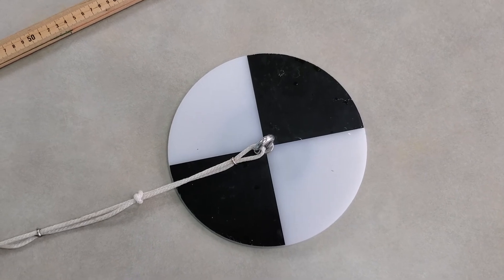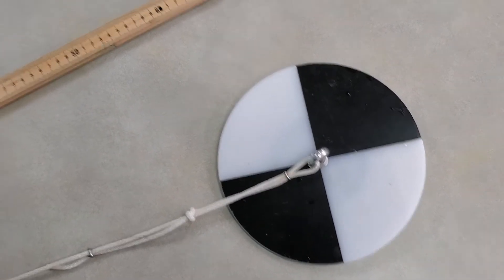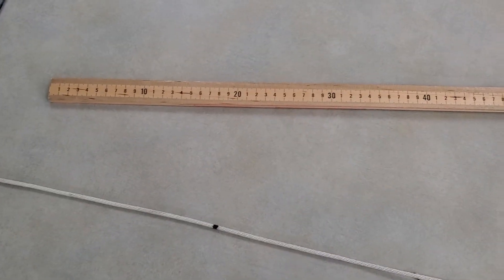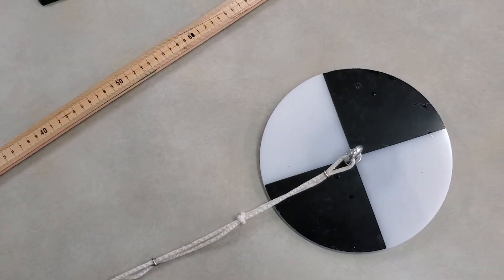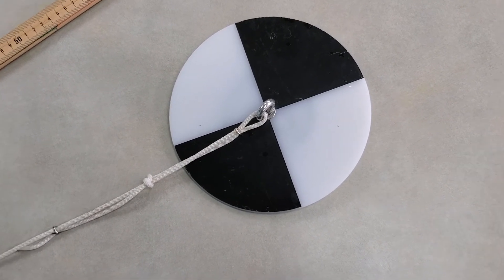Once we've figured out exactly how far down we can see it, we'll measure how far we are from one of the markers using our meter stick, and that will help us know how far down our Secchi disc went into the water.